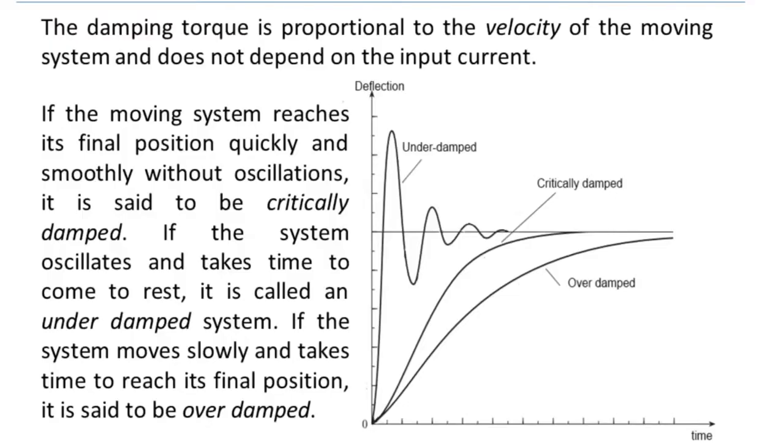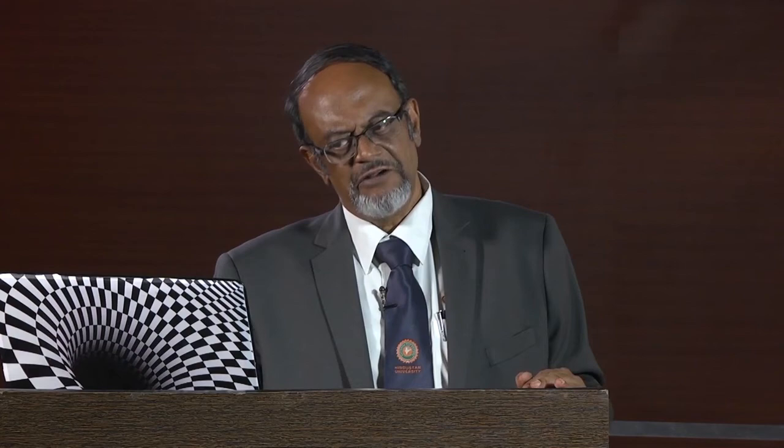We need a damping torque which is proportional to the velocity of the moving system — something absolutely independent from the input, but dependent upon the speed at which the pointer moves. You've probably already covered terminologies like underdamping, overdamping, and critical damping. What we need is a critically damped system — that means the moving system reaches its final position quickly and smoothly without oscillations. A comparative graph between the three types of damping can be seen on the slide.